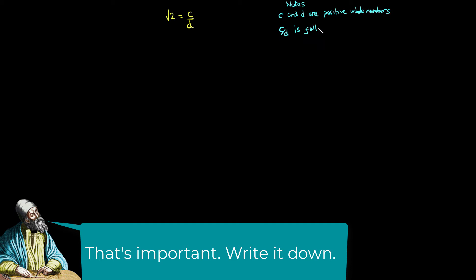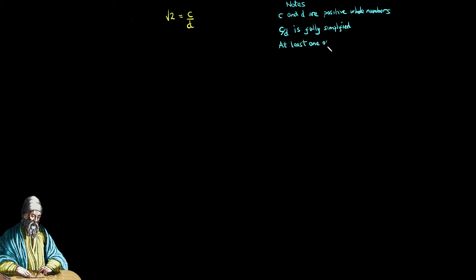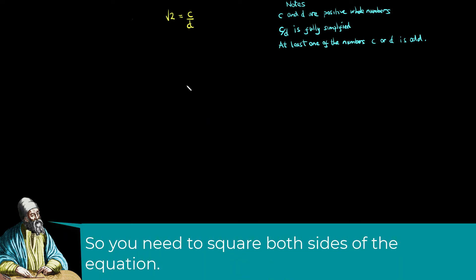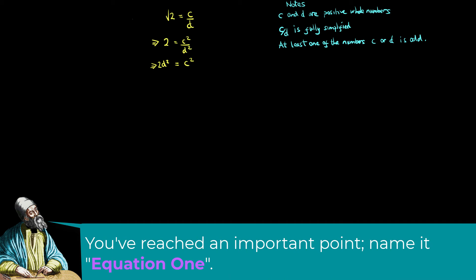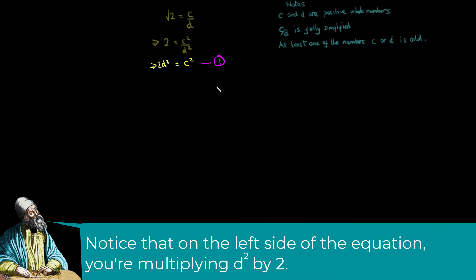Okay, Euclid, you're the boss. Now, I'd like to turn that root 2 into a whole number. And I'll rewrite the equation to remove the fraction. Thank you.